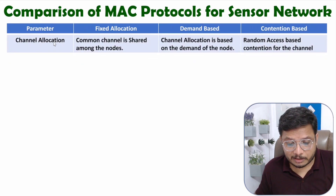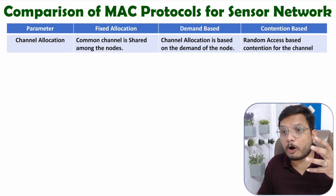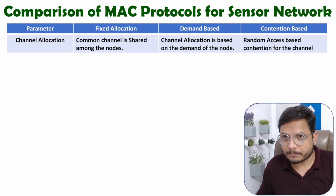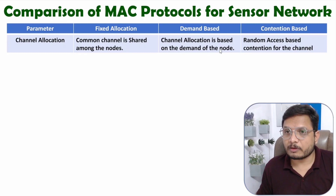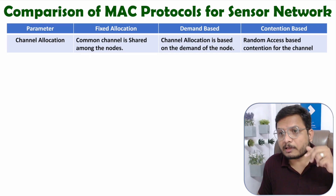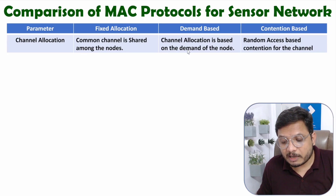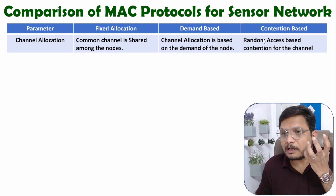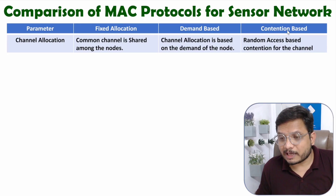The first parameter is channel allocation. In fixed allocation, a common channel is shared among all nodes, and all nodes communicate to the gateway through that common channel. In demand-based allocation, channel is allocated based on the demand of the node. In contention-based, random access contention-based protocols are used — in practice, Aloha and Slotted Aloha are the random access protocols for contention-based.